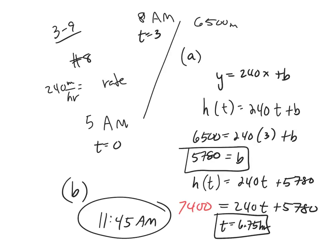This format — given something, finding another piece, then extending the function — is exactly the kind of question you can expect on a test. Also, I put a document under Documents and Handouts with four word problems that have parts A through E: what is the slope, explain the significance of the slope, and so on. I highly recommend you look at those four word problems — they're great examples, posted on Moodle.